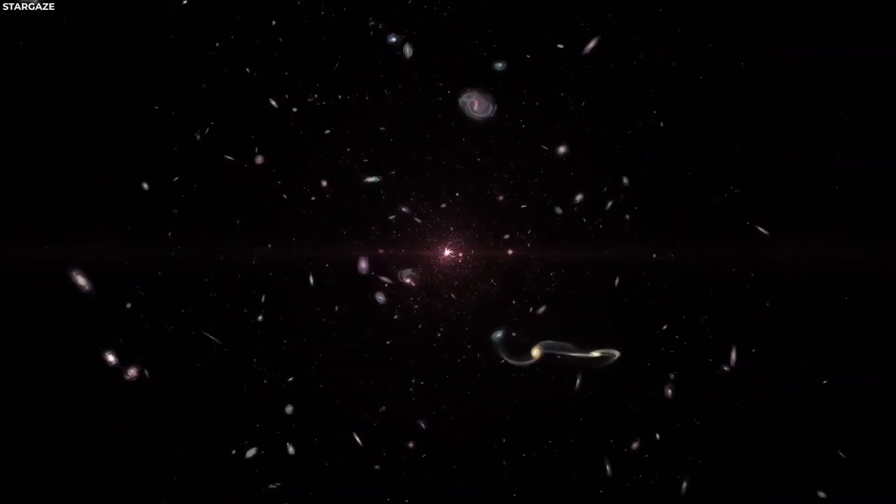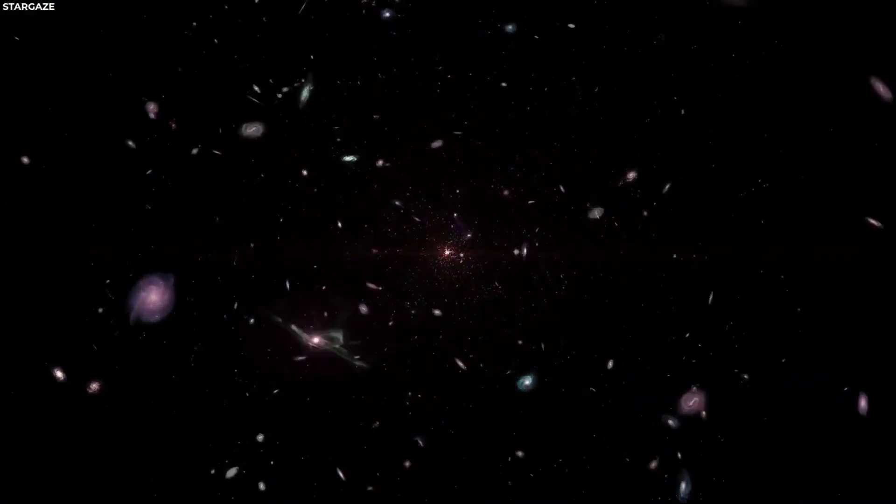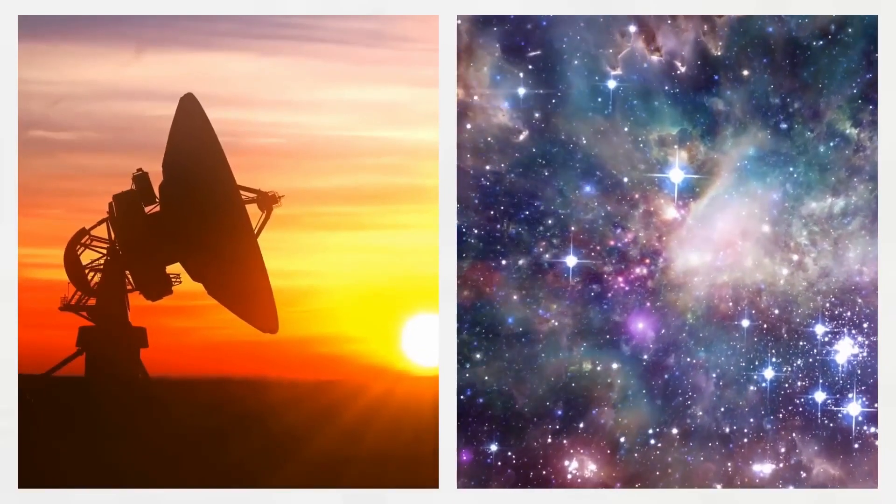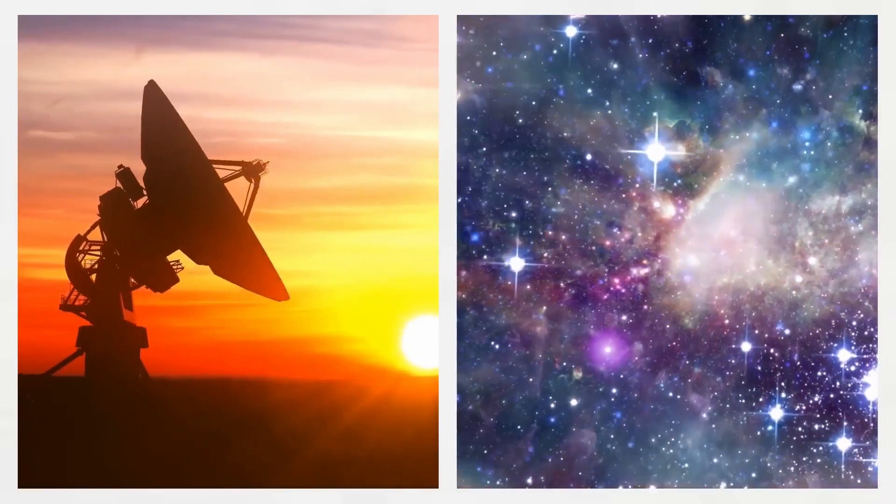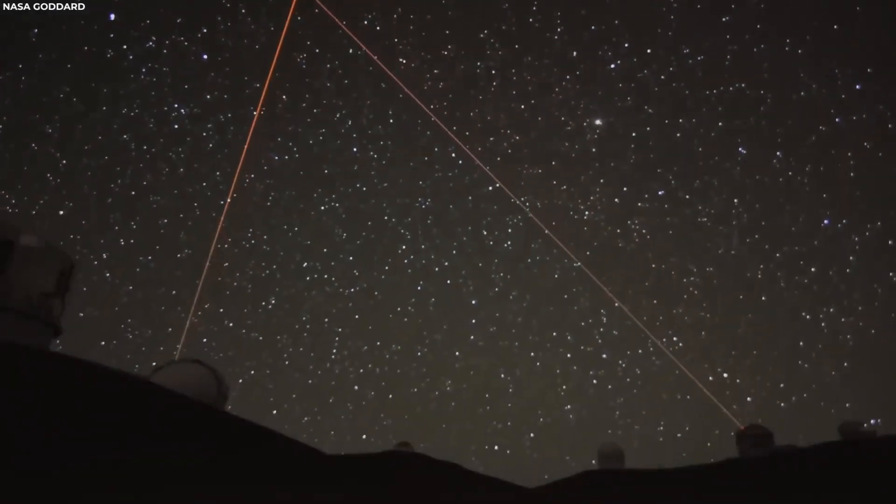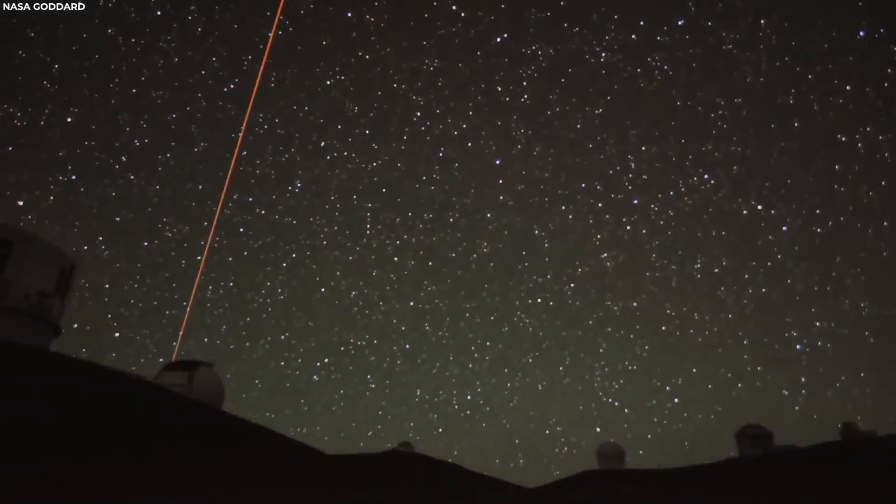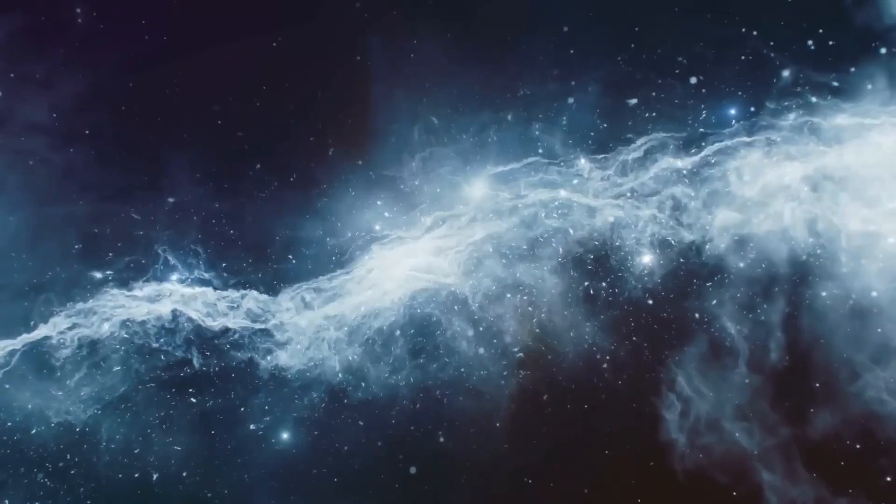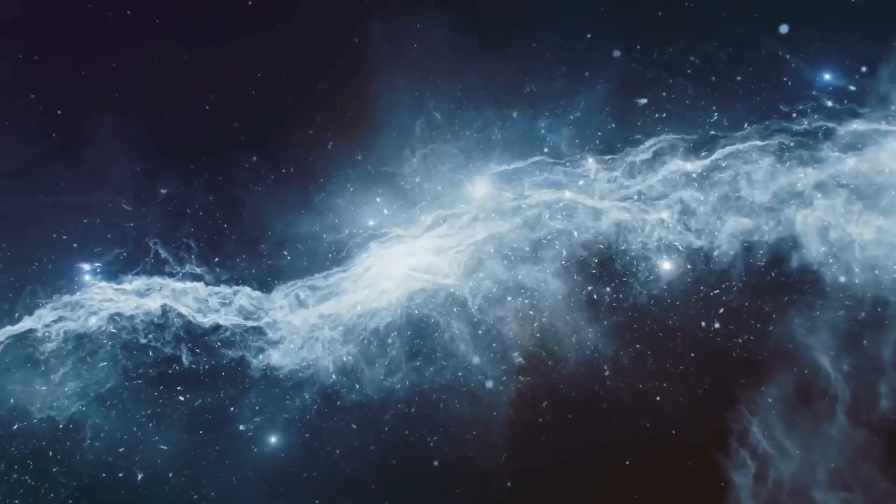Firstly, let's talk about time and light. The universe is so vast that light from distant stars takes ages to reach us. This means when we gaze at the night sky, we're looking back in time. It's like a cosmic time machine, showing us galaxies and stars as they were millions, even billions of years ago.